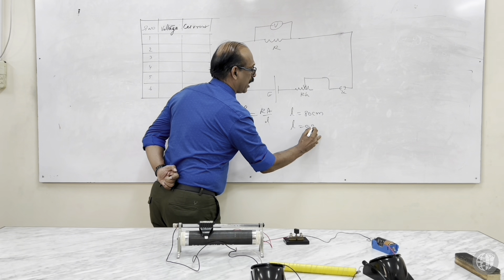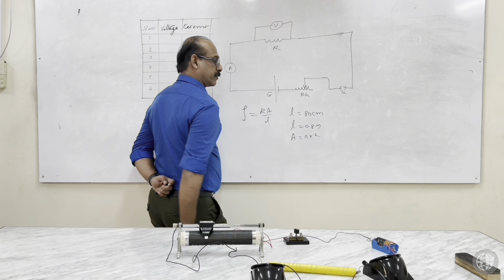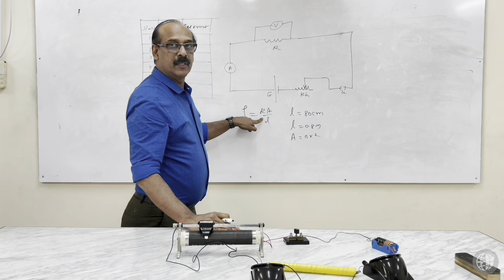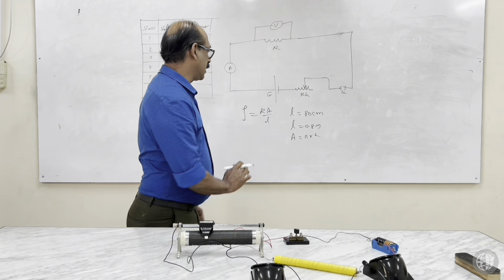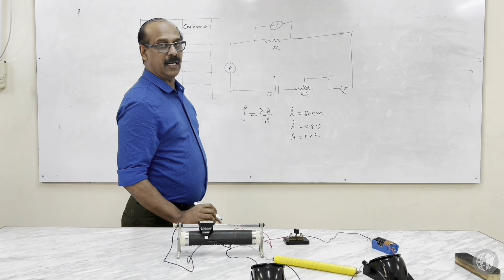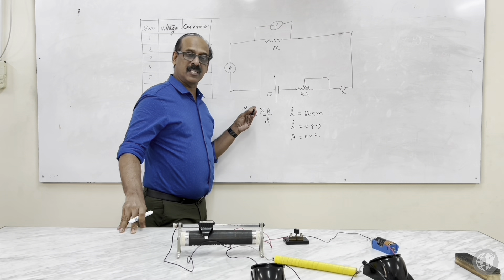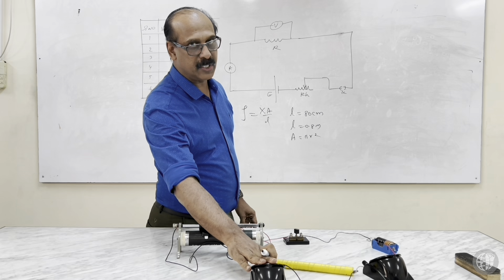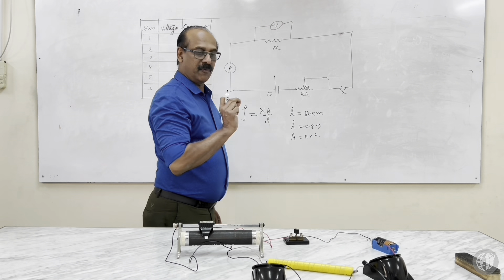Length comes to around 80 centimeters, which we take as 0.8 meters. Area of cross-section is pi r squared. First, let us find out R — the unknown resistance. We don't know this value, so instead of R we mark it X. The formula is: rho equals X times A divided by L. X is the unknown resistance of this wire, which we determine using Ohm's law.